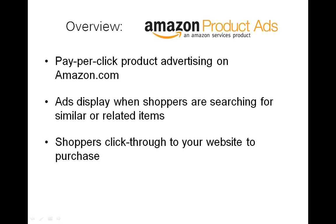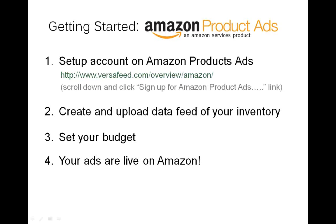The first step to get started with Product Ads is to create an account. VersaFeed has a great overview of advertising with Product Ads — go to VersaFeed.com/overview/Amazon to click through to our signup page. We're currently offering an introductory promotion where we'll give you a $75 credit to your account when you get your first click on a live ad — a great way to test out Product Ads and see how well traffic from Amazon converts on your website.